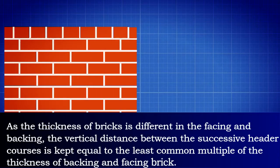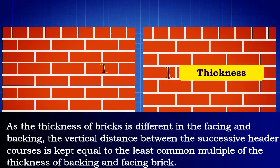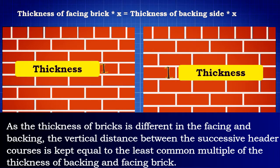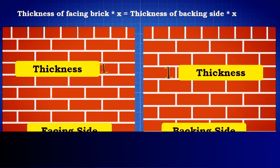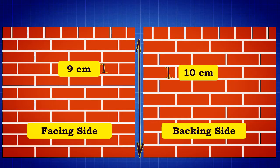As the thickness of bricks is different in the facing and backing, the vertical distance between the successive header courses is kept equal to the least common multiple of the thickness of backing and facing brick. That is, if the nominal thickness of facing bricks is 9 cm and that of backing bricks is 10 cm, the header course is provided at a vertical interval of 90 cm.